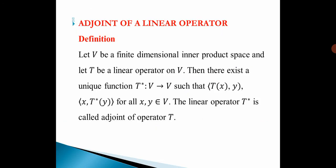Definition: Let V be a finite dimensional inner product space and let T be a linear operator on V. Then there exists a unique function T* from V to V such that the inner product of T(x), y equals the inner product of x, T*(y) for all x, y belonging to V. Then the linear operator T* is called the Adjoint of Linear Operator T.